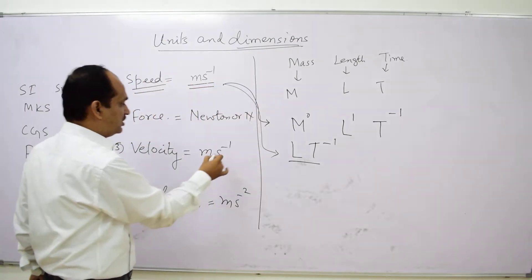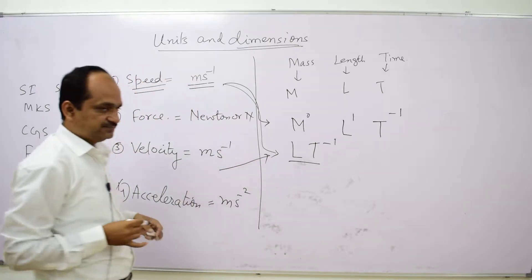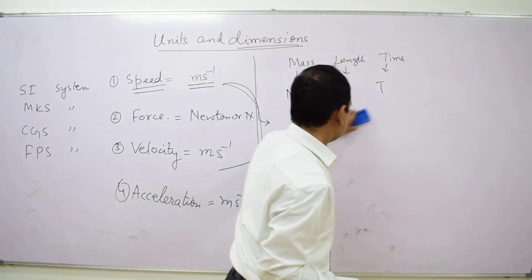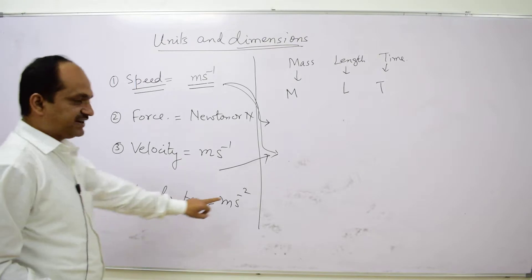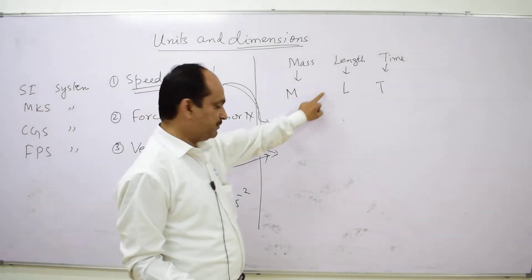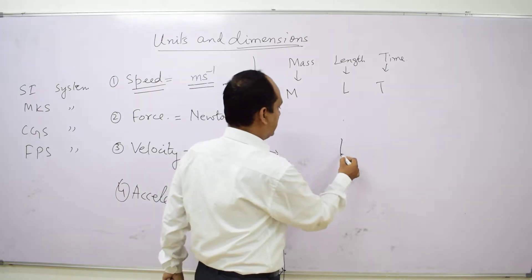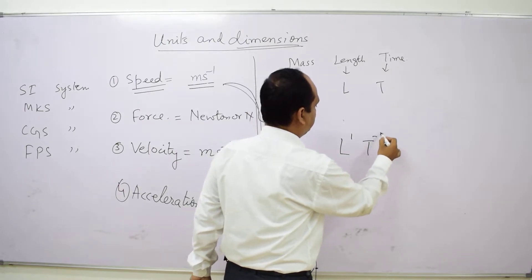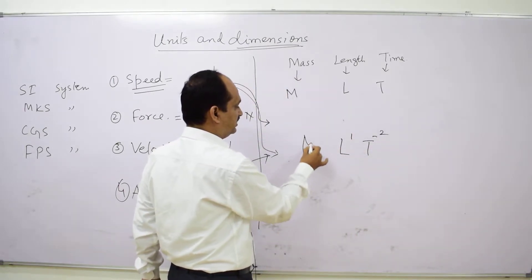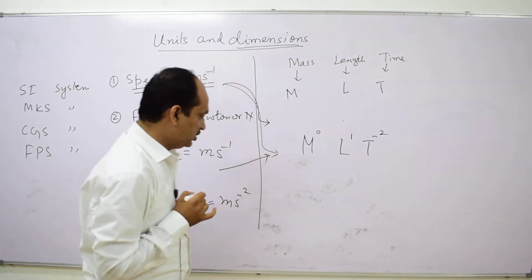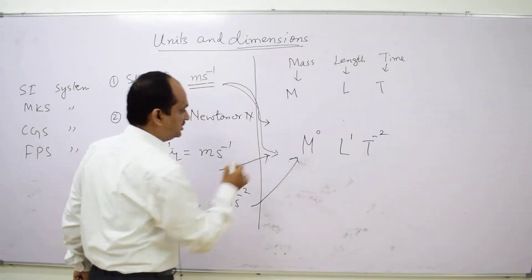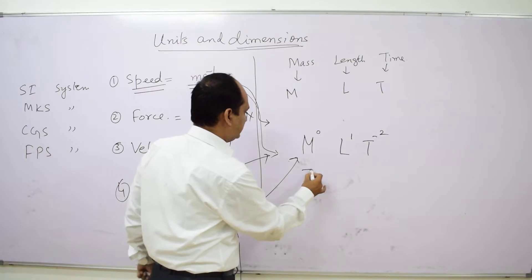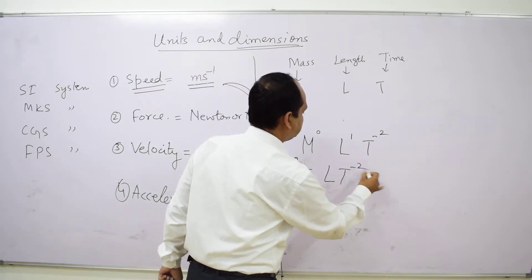This is also the dimensional formula for velocity. For acceleration, its unit is meter per second square. Meter gives L to the power 1, and second squared gives T to the power minus 2. Mass is not present, so the dimensional formula for acceleration is M⁰ L¹ T⁻², or simply L T minus 2.